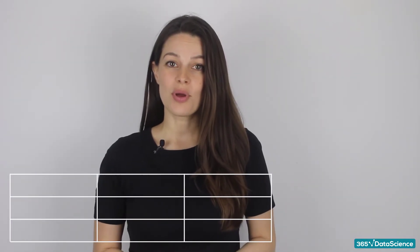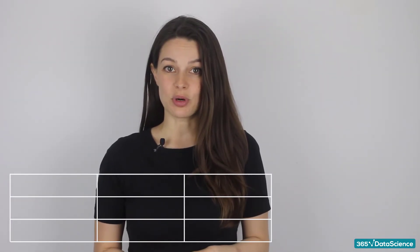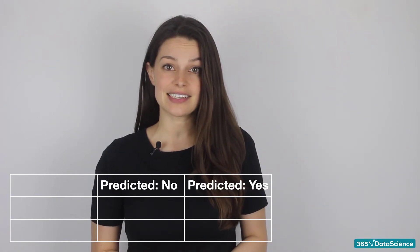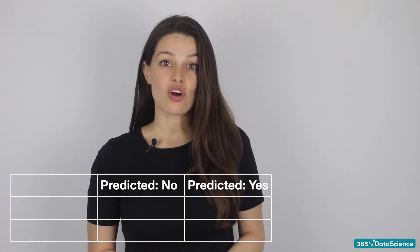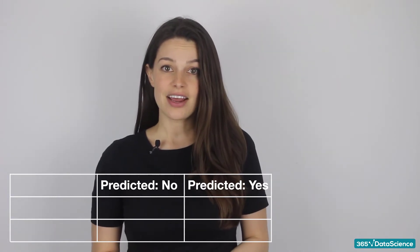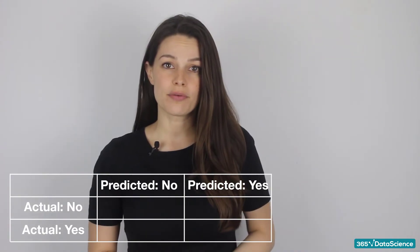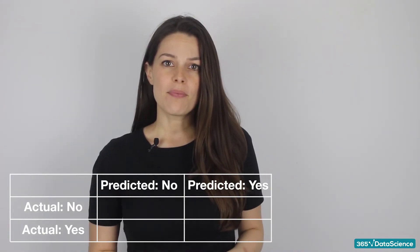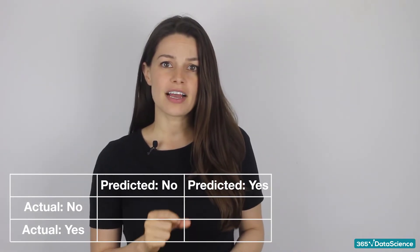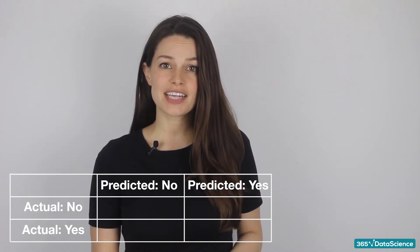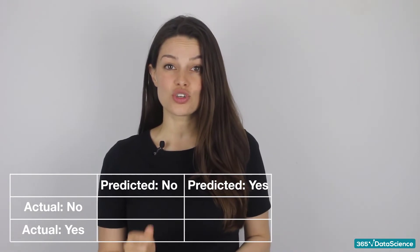It looks like this. It has four quadrants. Across the top represents predictions of what the data is, and across the side represents the actual data — the truth. The point of a confusion matrix is to observe the strengths and weaknesses of a model.